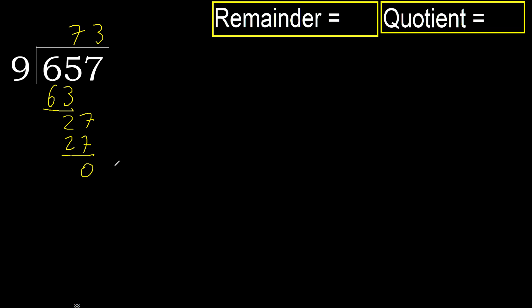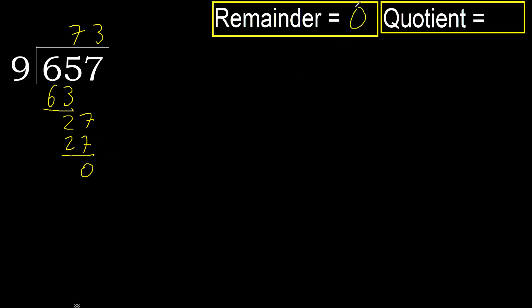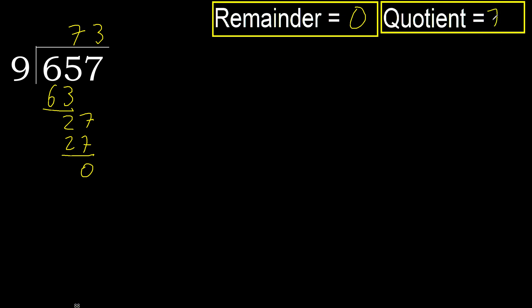Therefore, finish. 657 divided by 9 is 73.